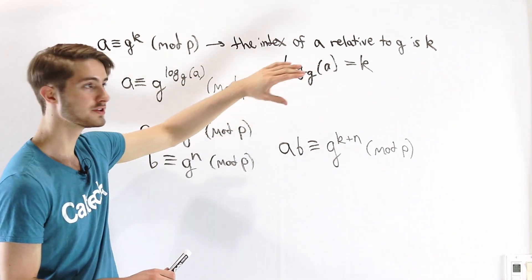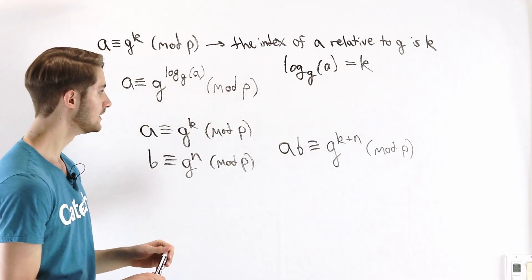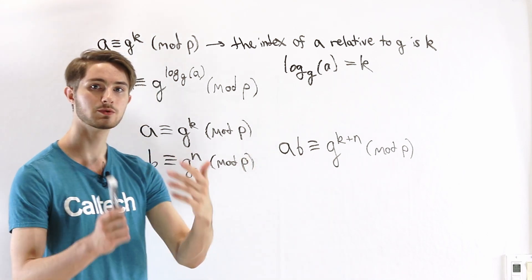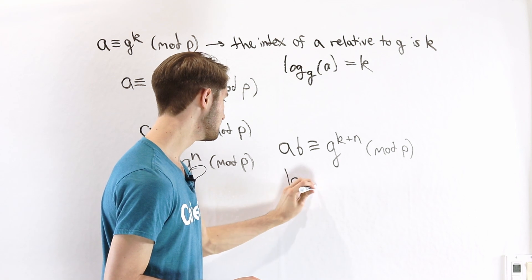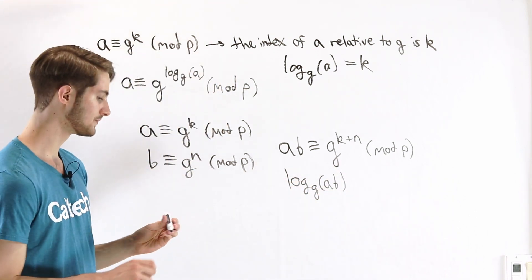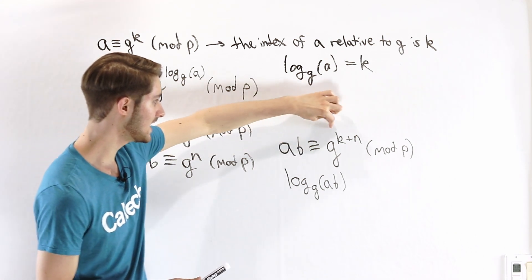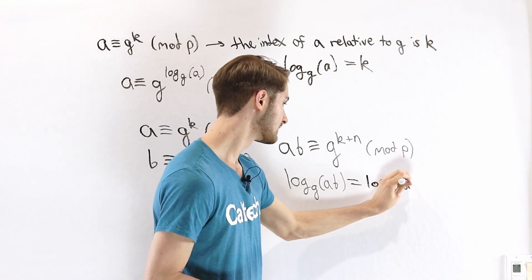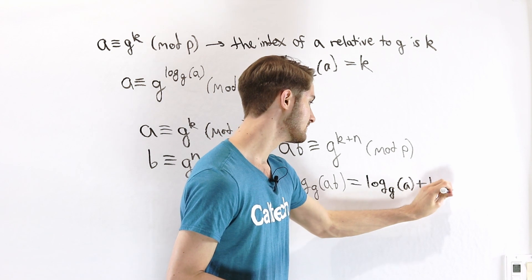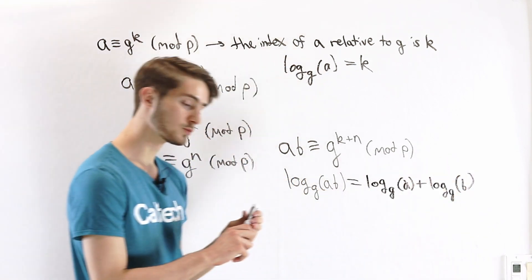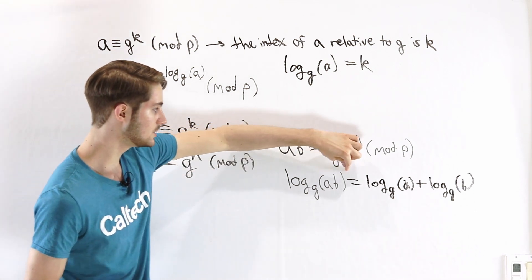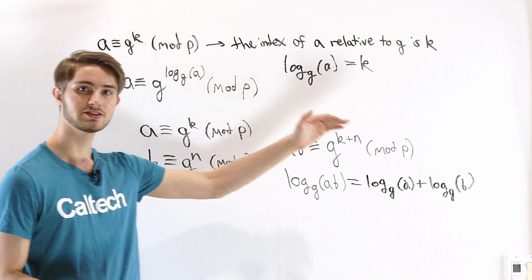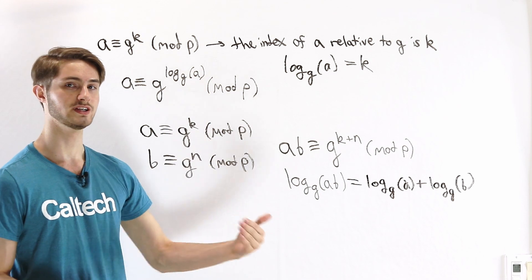In order to understand better how this relates to standard logarithms, we can rewrite this congruence using logarithm notation. What we're talking about is the index of a times b, which we can write as log base g of (a times b). What we've shown is that this equals k plus n, where k is the index of a and n is the index of b. So this is a rule you probably recognize from algebra: log(ab) equals log(a) plus log(b). That's because the idea of indices is related to exponents in a very similar way to standard logarithms.